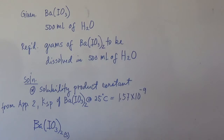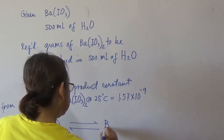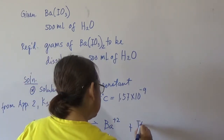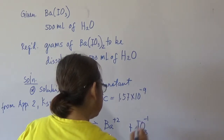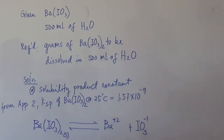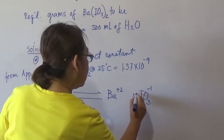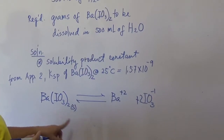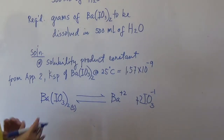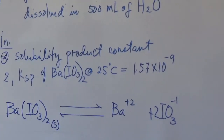Once barium iodate is in water, it will ionize into barium ion, which is Ba²⁺, and the iodate ion, IO₃⁻, which is negative one. Before proceeding, you have to balance the equation. You will have two moles of iodate ion and one mole of barium. Take note that barium iodate is solid.